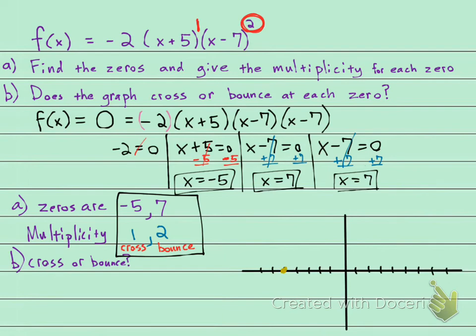And at 7, 1, 2, 3, 4, 5, 6, 7, my graph is going to touch there. From the end behavior of the graph, I know that it's going to start from up here and it's going to cross and go down to some point, I don't know where, but some point. And then at this zero, it is going to bounce off of this zero, like that.